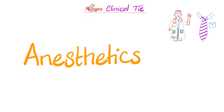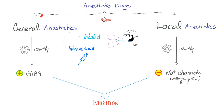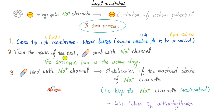Anesthetics are divided into general and local. General anesthetics cause loss of consciousness by stimulating GABA, which is inhibitory and suppresses the nervous system. Local anesthetics do not cause unconsciousness — they act locally to stop sodium influx and depolarization via inhibition of voltage-gated sodium channels, leading to inhibition of action potential conduction.